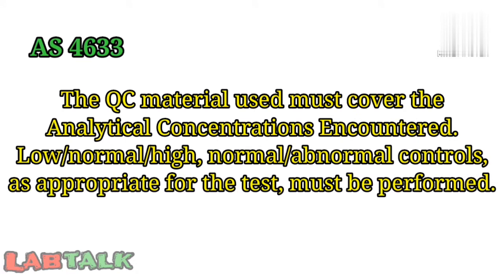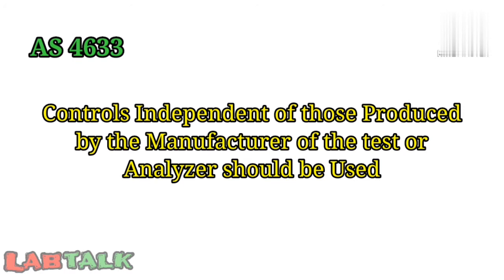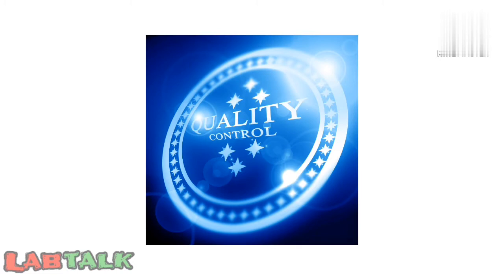Regarding control materials, one recommendation comes from the Australian document AS 4633, a supplementary document for ISO 15189. It recommends that QC material must cover the analytical concentrations encountered and should include low, normal, high, and abnormal controls as appropriate for the test. A second recommendation is that controls independent of those produced by the manufacturer of the test or analyzer should be used — these are called third-party QC materials.